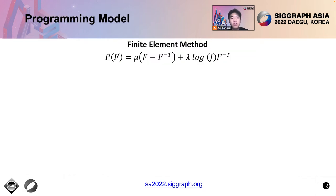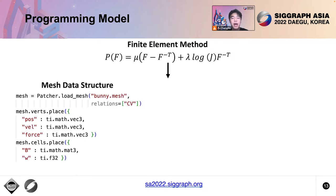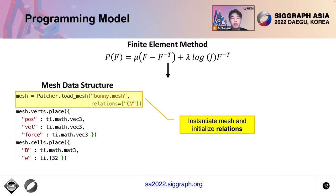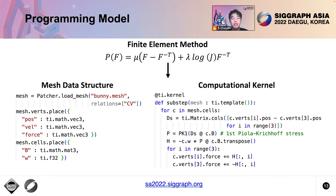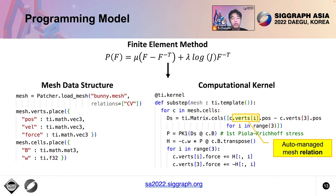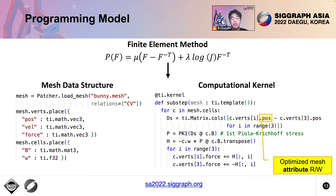We demonstrate the usage of MeshTaichi using an explicit finite element method example with the Neo-Hookean model. Users can instantiate a mesh with an external file and initialize the wanted relations, and define attributes for each mesh element using the place method. The mesh computations are declared within a mesh-for loop of a Taichi kernel. Our compiler will parallelize the outermost mesh-for loops with high-performance kernels. All relation queries are auto-managed with intuitive reference syntax, and our compiler takes over the caching scheme for mesh attributes, making attribute access optimized and efficient.